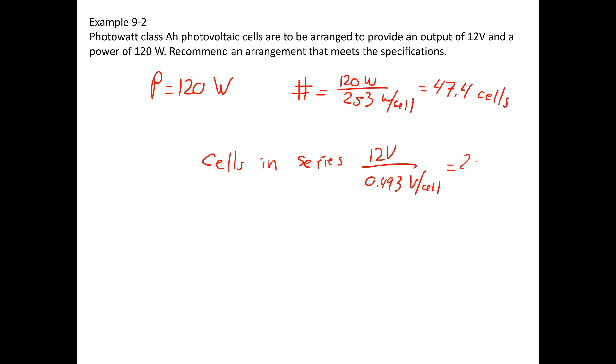So basically, what I would conclude is that I need 25 cells in series, and I need 2 of those arrangements in parallel to give me a total of 50 cells. So I know I need a minimum of 47.4 cells, I know that I need a minimum of 24.3 in series.